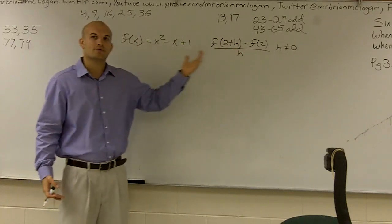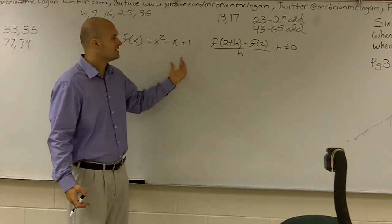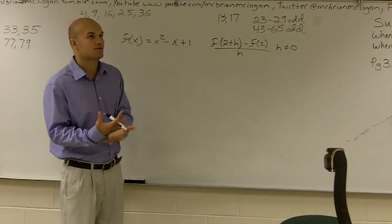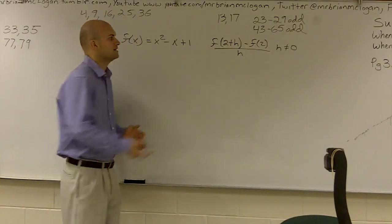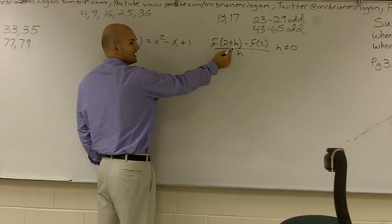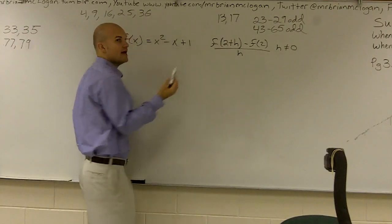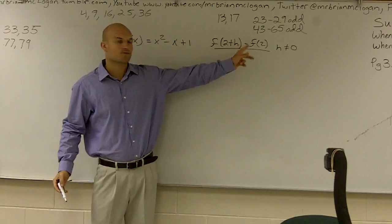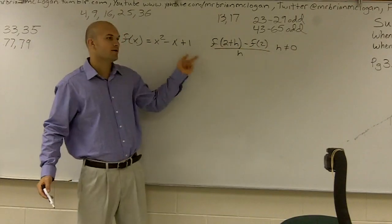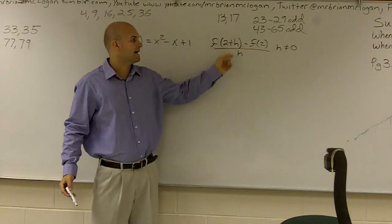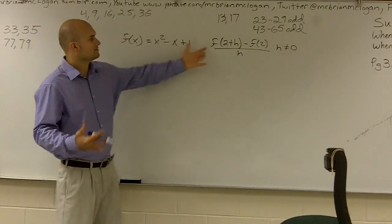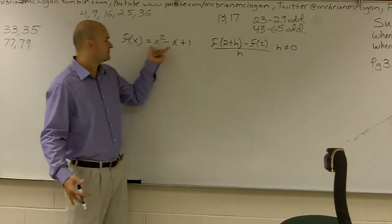For what we call the difference quotient, what they want us to do is evaluate our function on two different terms. They want us to evaluate this function for 2 plus h, then subtract from it the value of this function for 2, and then divide it all by h, where the constraint is h cannot equal 0.